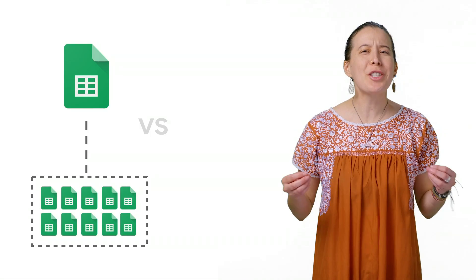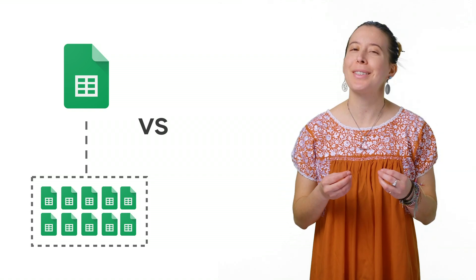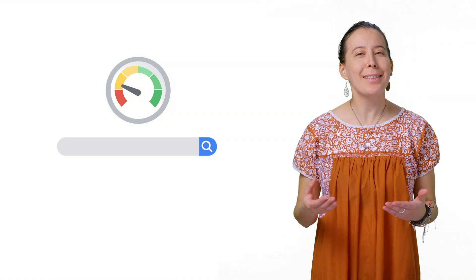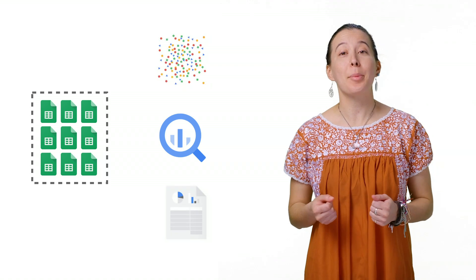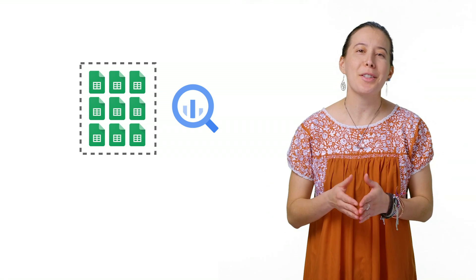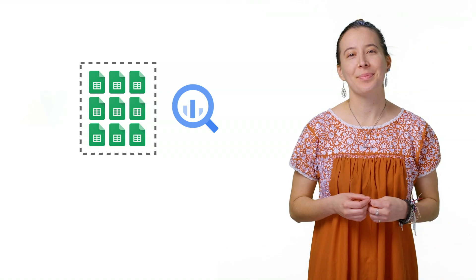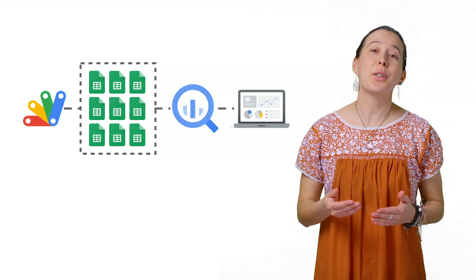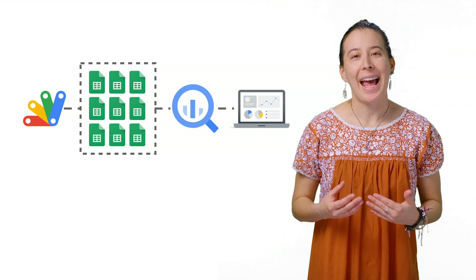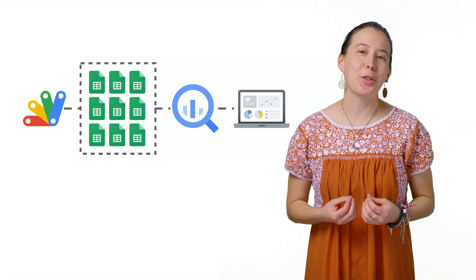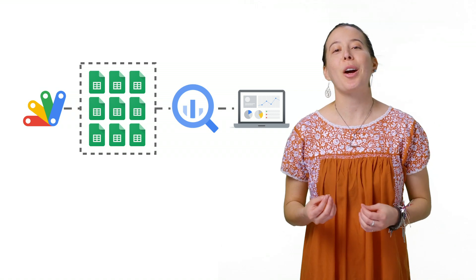It's common for spreadsheets that help us run pivotal operations to reach limitations when they begin to take the place of a database. Performance issues begin to be noticed in speed or search. This is where Google's BigQuery database comes in, especially to help centralize data from multiple sources or process very large volumes of rows and columns when data exceeds spreadsheet quotas. In this episode, I will share how to use an Apps Script to upload multiple Google Spreadsheets at once into a database and then build dynamic dashboards for your stakeholders to find insights using a free Google product called Data Studio.